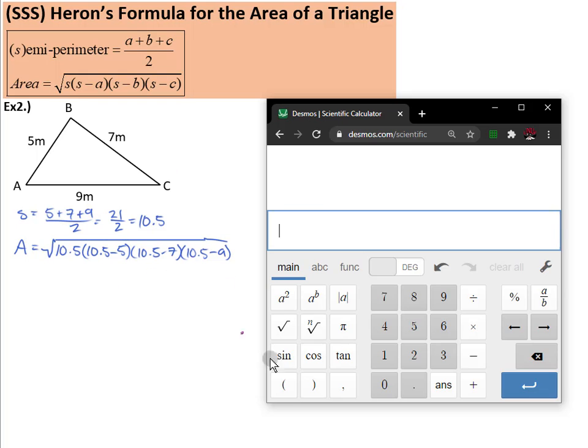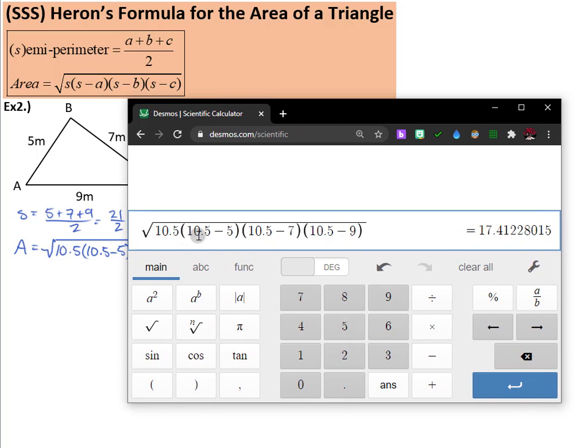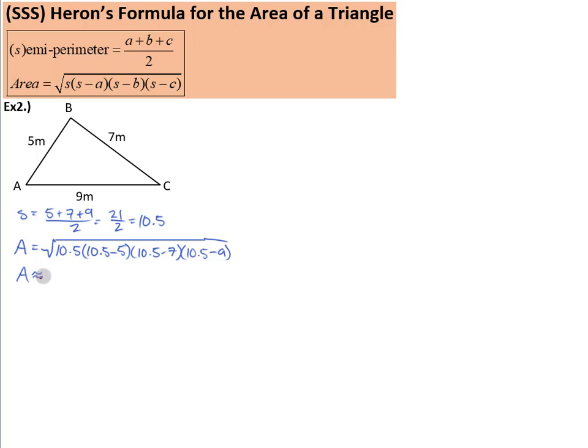So, of course, we can go to our calculator and type it in. 10.5 times 10.5 minus 5, times 10.5 minus 7, times 10.5 minus 9. And, of course, this is very long. Lots of calculations in here, so you might want to make your Desmos wider. Make sure you didn't make any mistakes typing it in. Looks okay. And check it out. This is, by the way, the same example we just did with law of sines. And it makes sense. We get the same area. 17.41 meters squared.